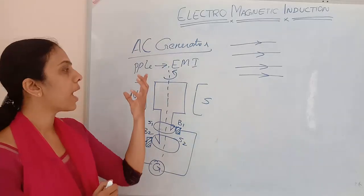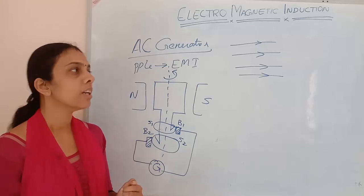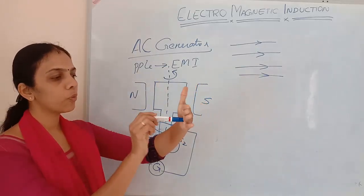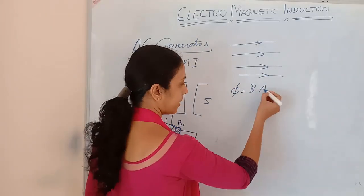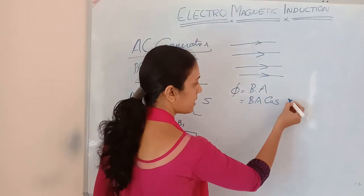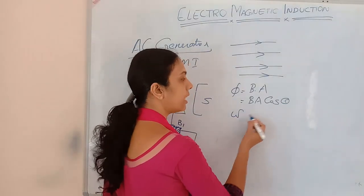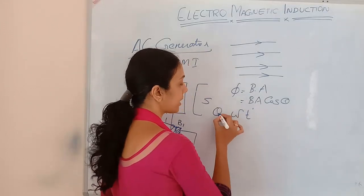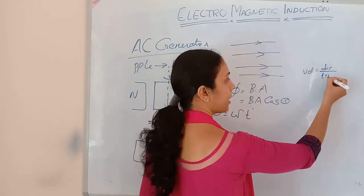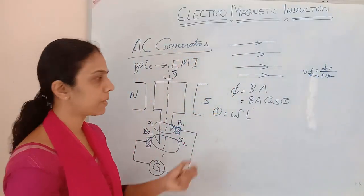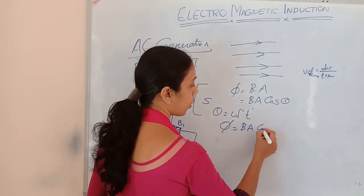Since the magnetic flux is changing, an EMF is induced in the circuit, and because of that, a current is generated — that is called induced current. The flux linked with the circuit is φ = B·A = BA cosθ, where θ is the angle of angular displacement. If ω is the angular velocity, then θ = ωt, so we can write φ = BA cos(ωt).